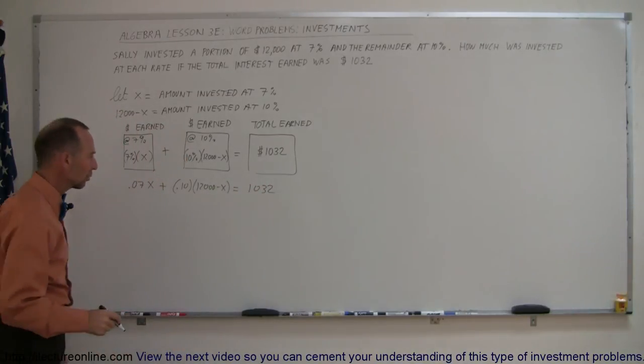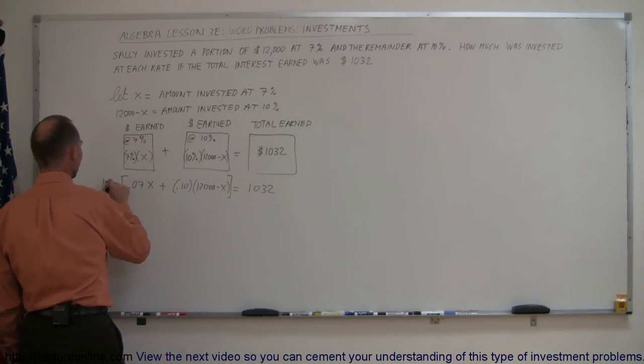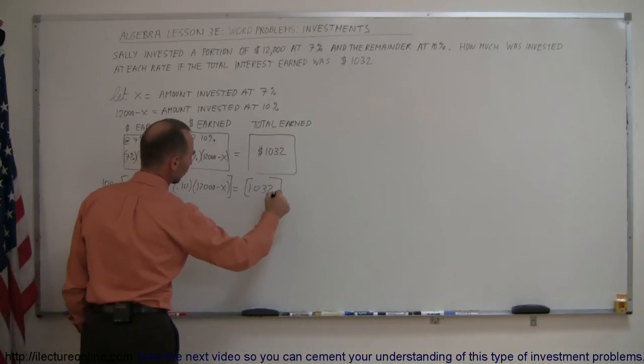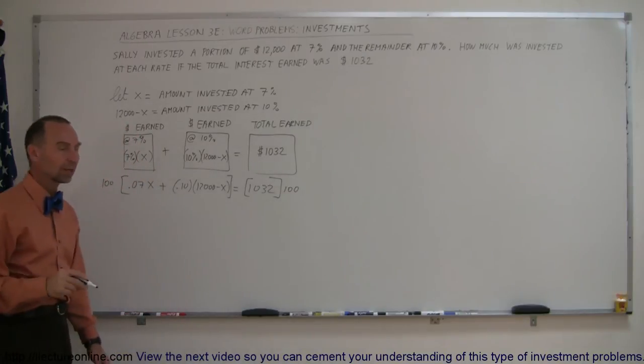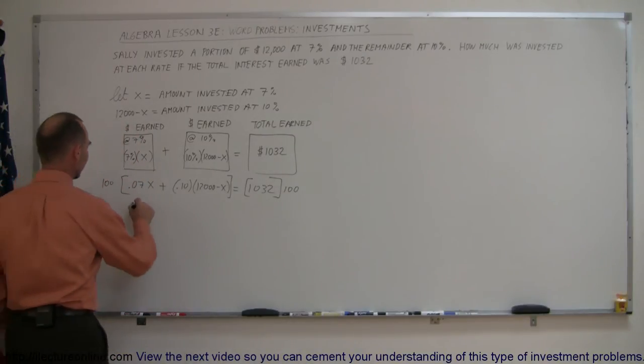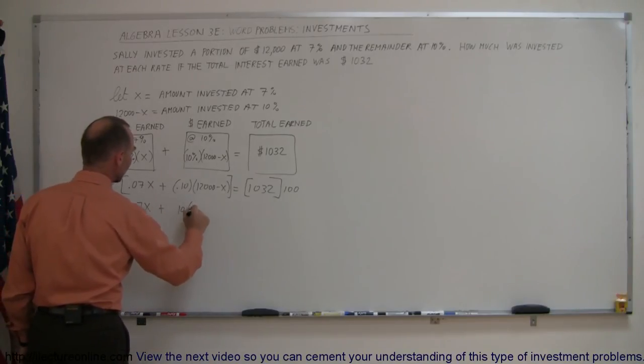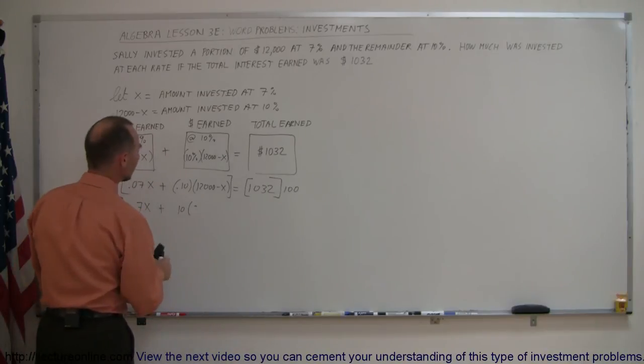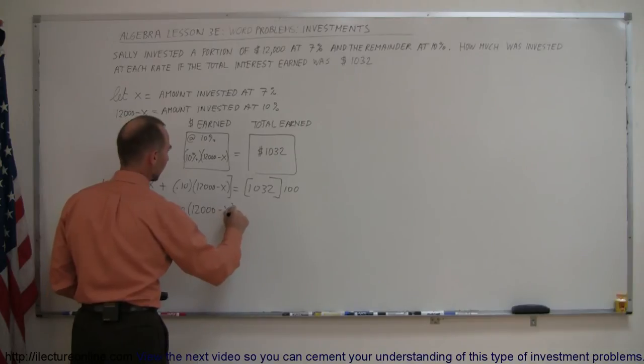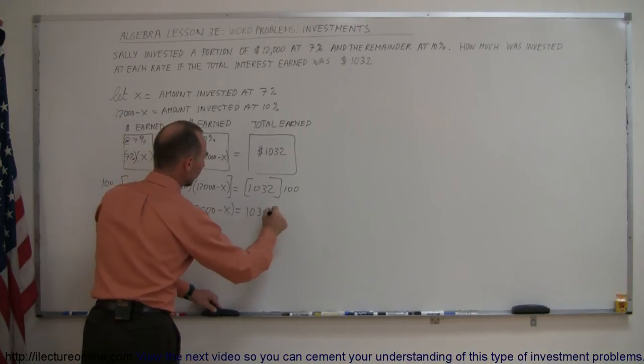And, of course, the first thing we want to do here is get rid of the decimal places. That means we multiply the first, or the left side by 100, because we have to move the decimal place over by two places here. But we must do the same to every term in the equation, both the left and the right side. 100 times 0.07 is 7X plus 100 times 0.1 is 10 times, that would be 12,000 minus X equals 100 times this, which is 103,200.